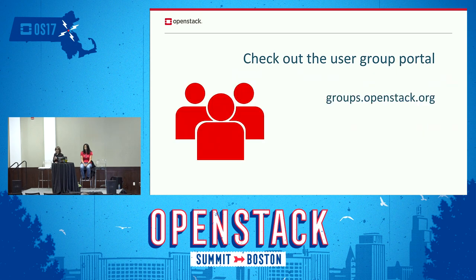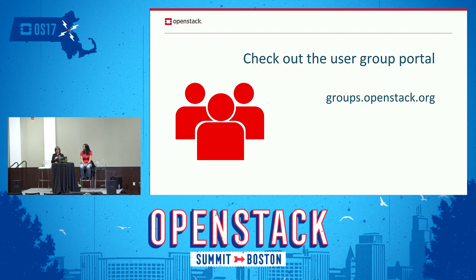Check out the user group portal. This is where you'll find all your information — whether it's to start a new user group, or to find your local user group. There's a gigantic list of all the different ones we have around the world, plus tip pages, information to get started, people you can contact. This portal also has a link to the ambassadors page where you can find who your local ambassador is.